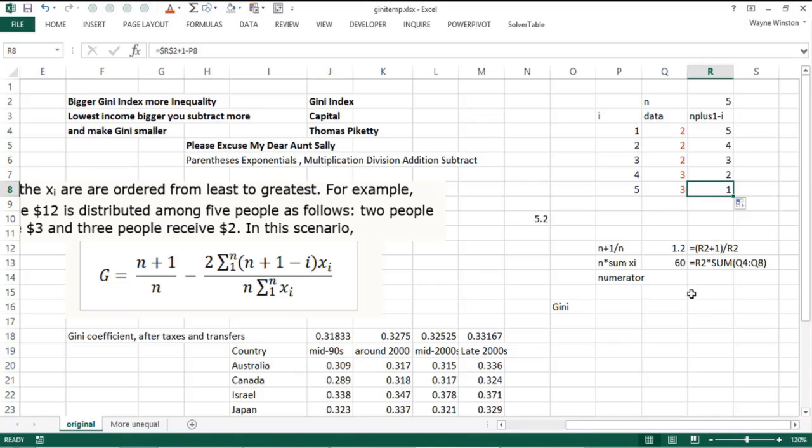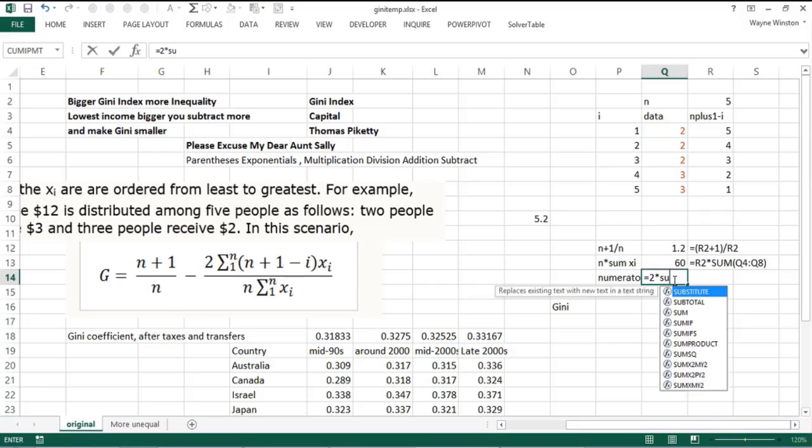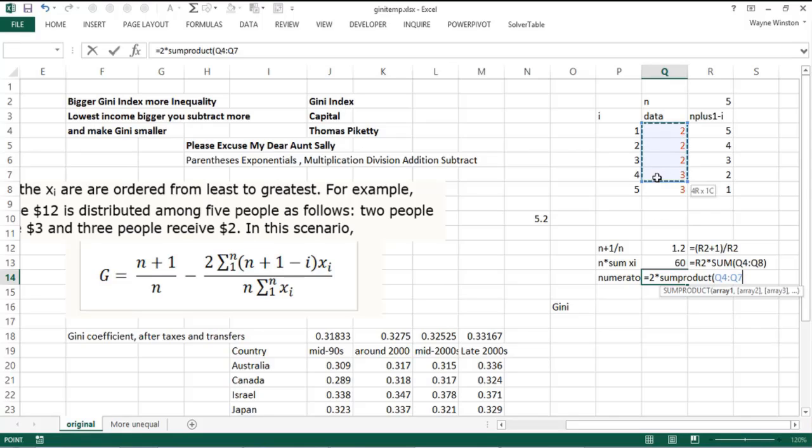There is a great function for that: the SUMPRODUCT function, which we use a lot later in the course when we talk about solving. What I would do is take two times SUMPRODUCT—we'll take a row times a row or a column times a column—so I take this column times this column. That comes out to be 66.